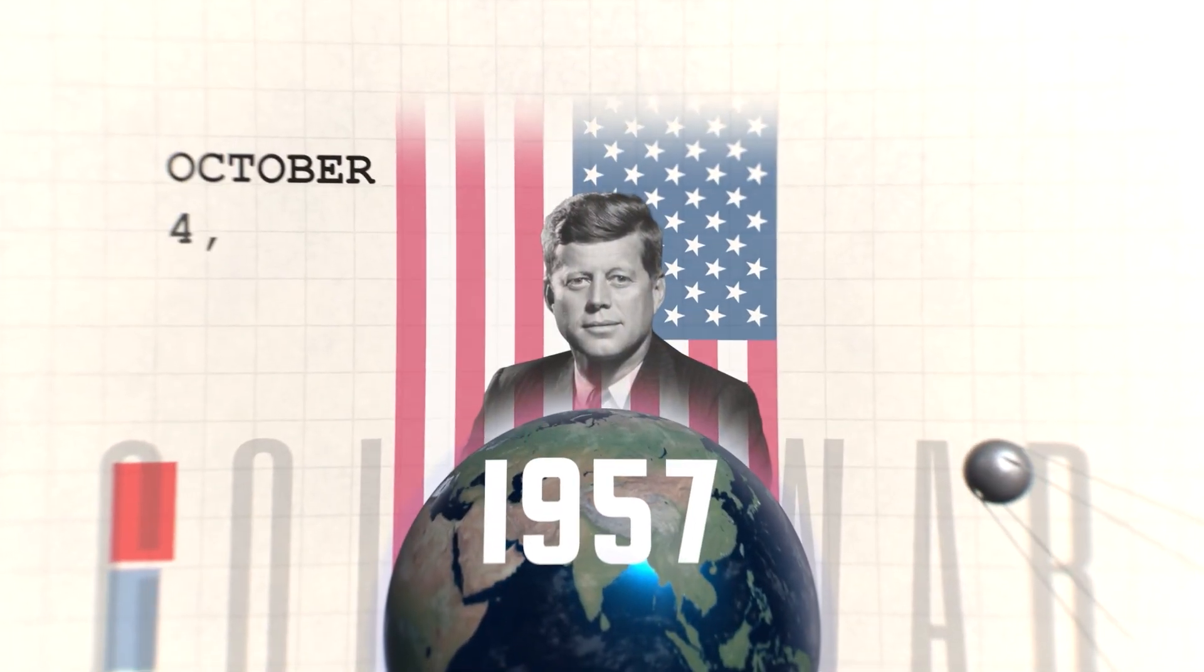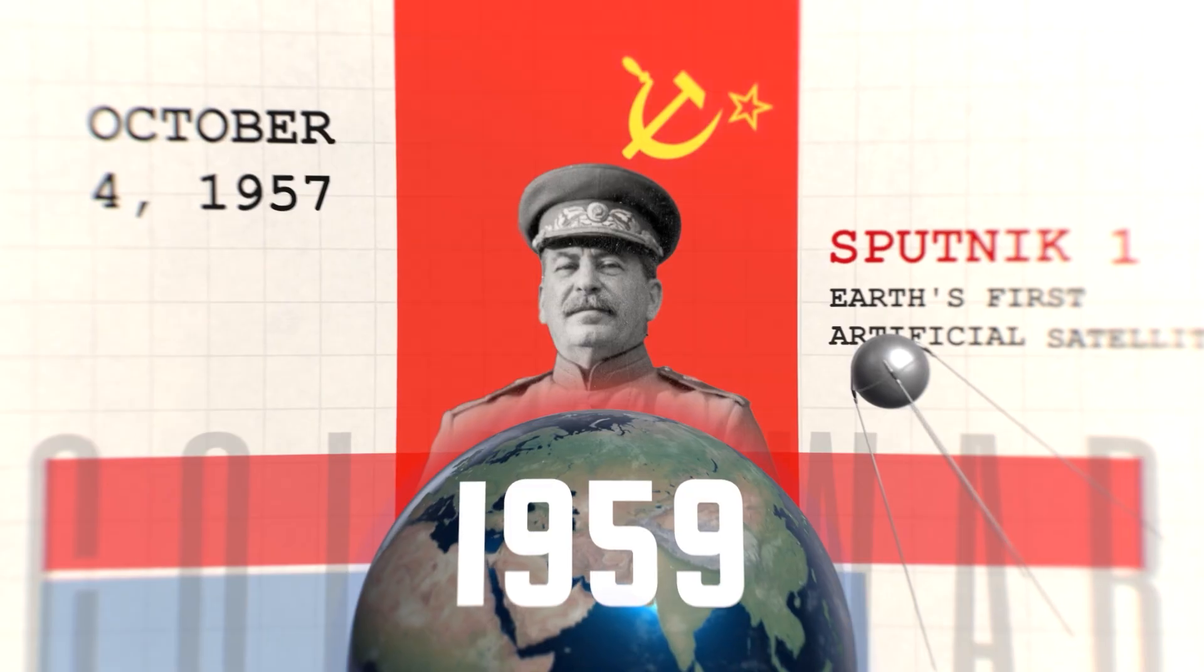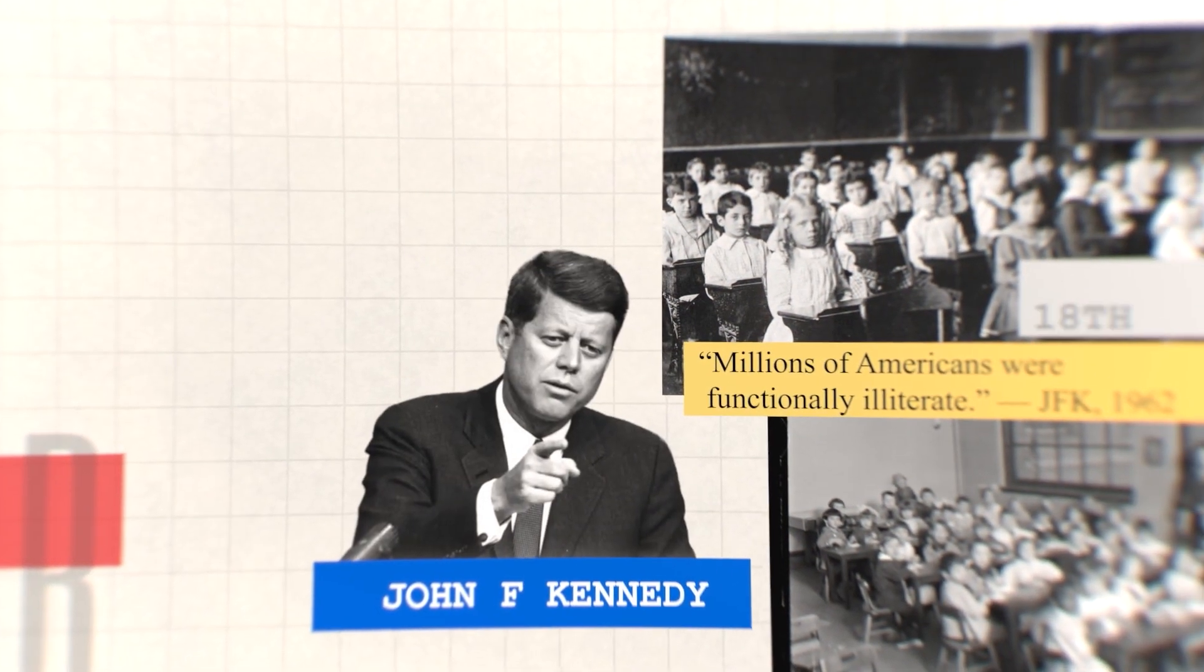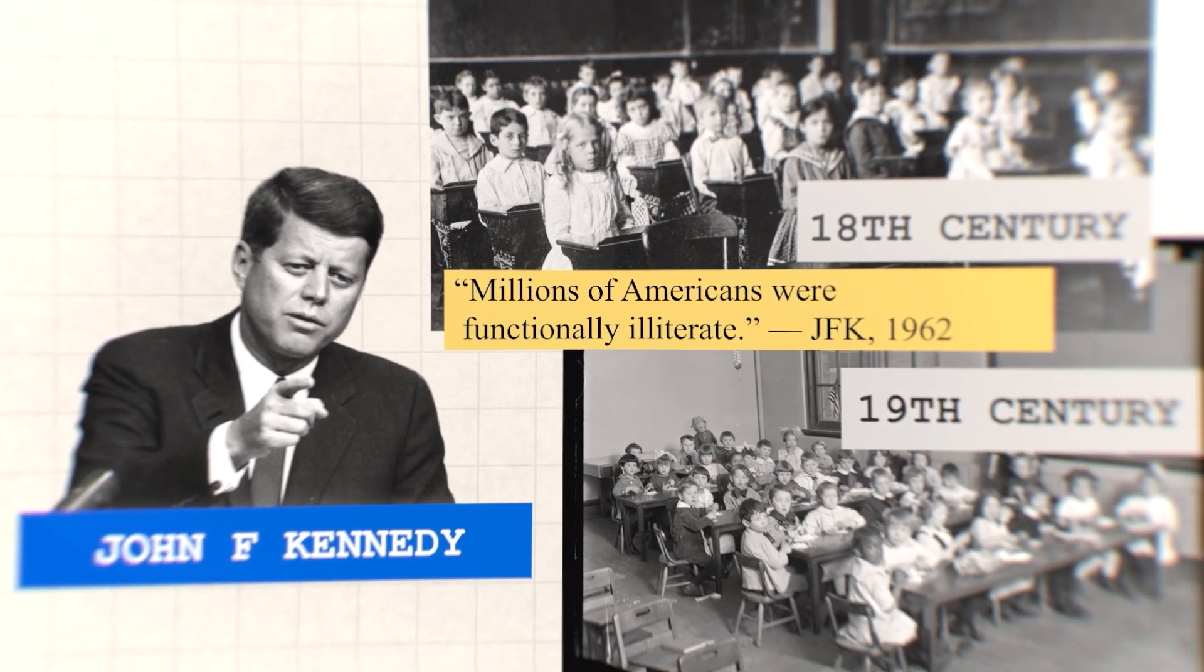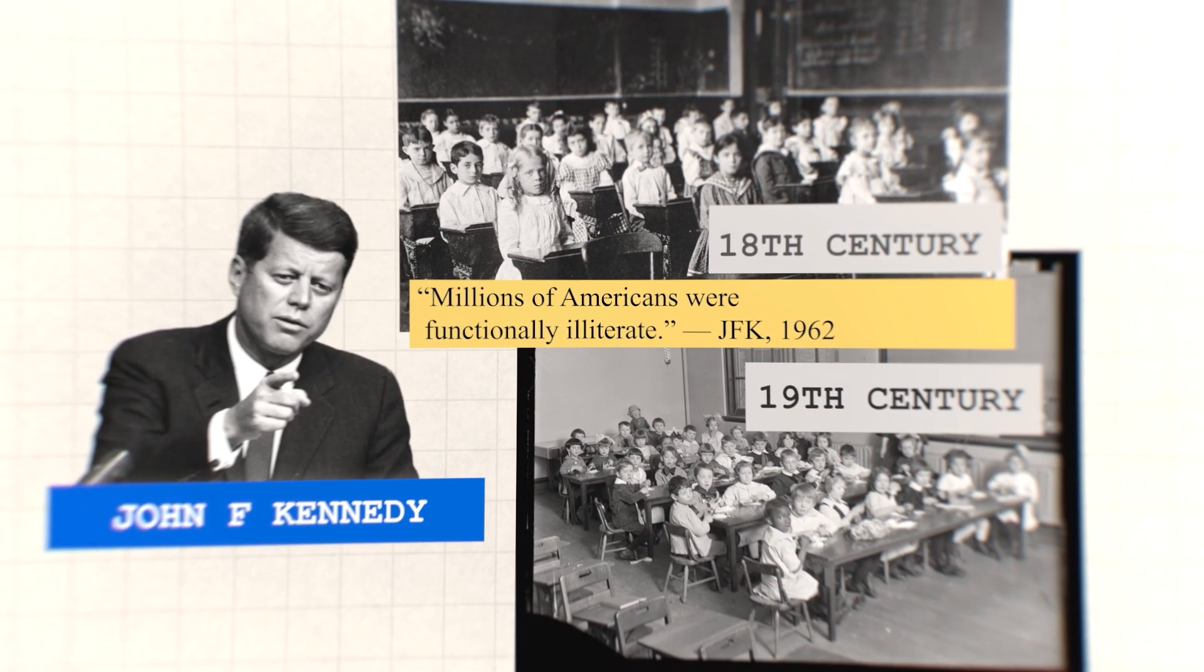The year is 1960, and America is losing the space race, the Cold War, and its own future. Because half of its high school graduates are functionally illiterate, and the classroom hasn't changed in a century. So educators and politicians are both desperate for a solution.